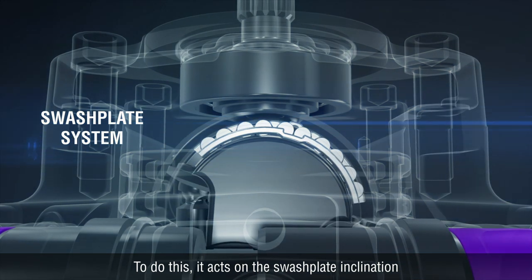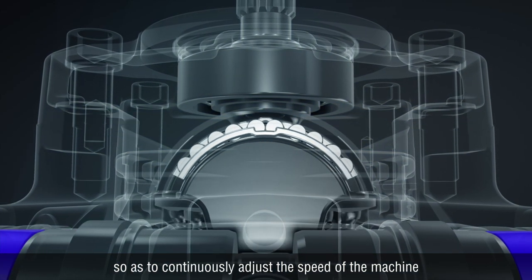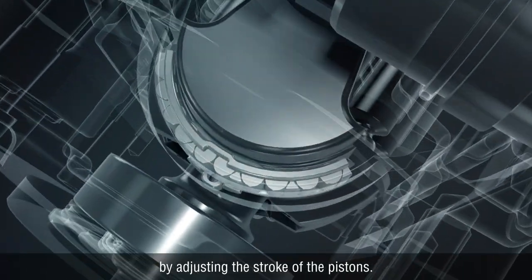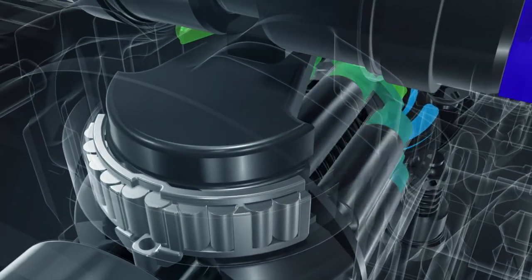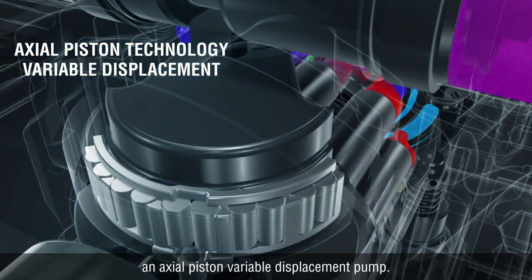To do this, it acts on the swash plate inclination so as to continuously adjust the speed of the machine by adjusting the stroke of the pistons. This is why the pump is called an axial piston variable displacement pump.